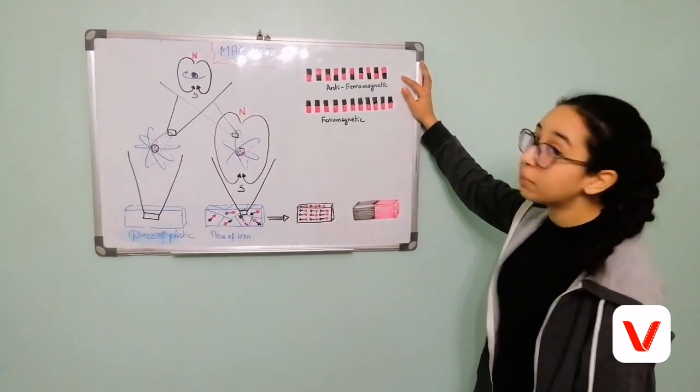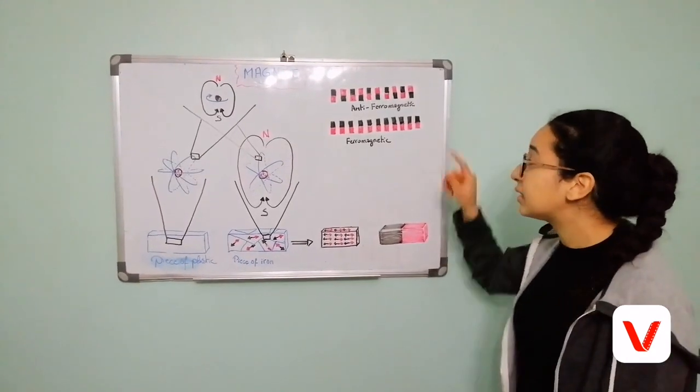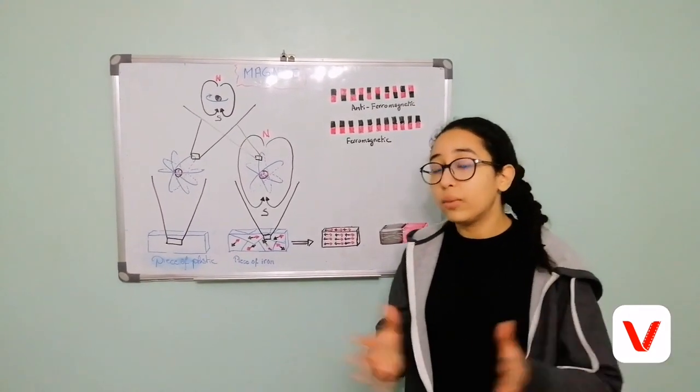Line their magnetic fields up in an opposite way and then cancel out each other, or they may put themselves in the same way, and then the solid will be magnetic.